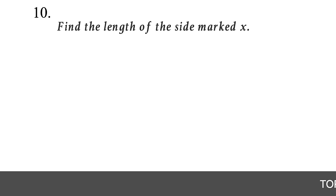Question 36. What value of x will make the expression (2x + 3) ÷ (x - 2) undefined? For an expression to be undefined, the denominator must be 0. Set x - 2 = 0 and solve: add 2 to both sides, x = 2. Therefore, the correct answer is a: x = 2.